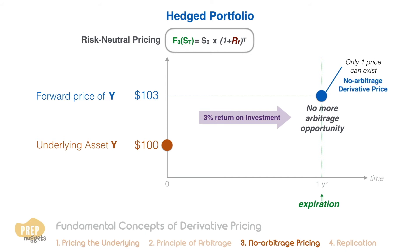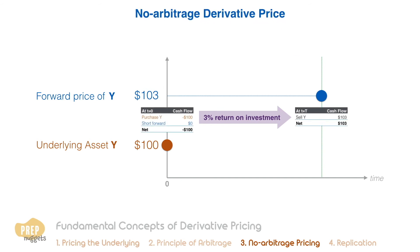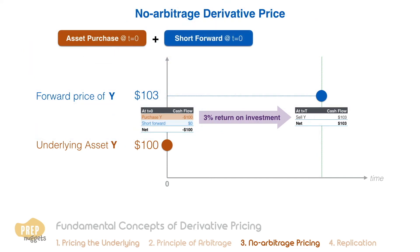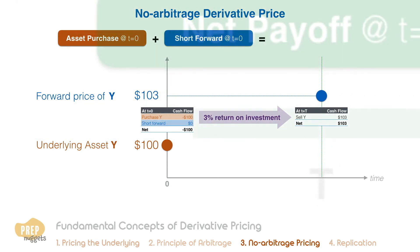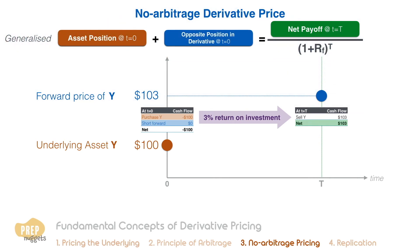The no-arbitrage derivative price has to satisfy this equation: the purchase of the underlying asset at time zero plus the short position in the forward at time zero equals the present value of the net payoff at time T, discounted by the risk-free rate. This equation can be generalized to: a position in the underlying asset plus the opposite position in the derivative equals the present value of the net payoff at time T, discounted by the risk-free rate.